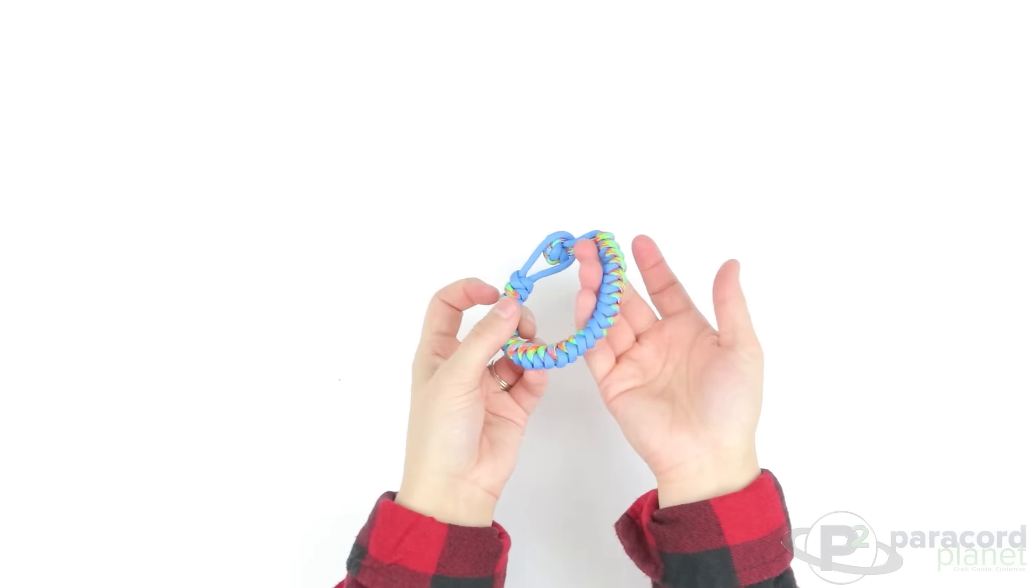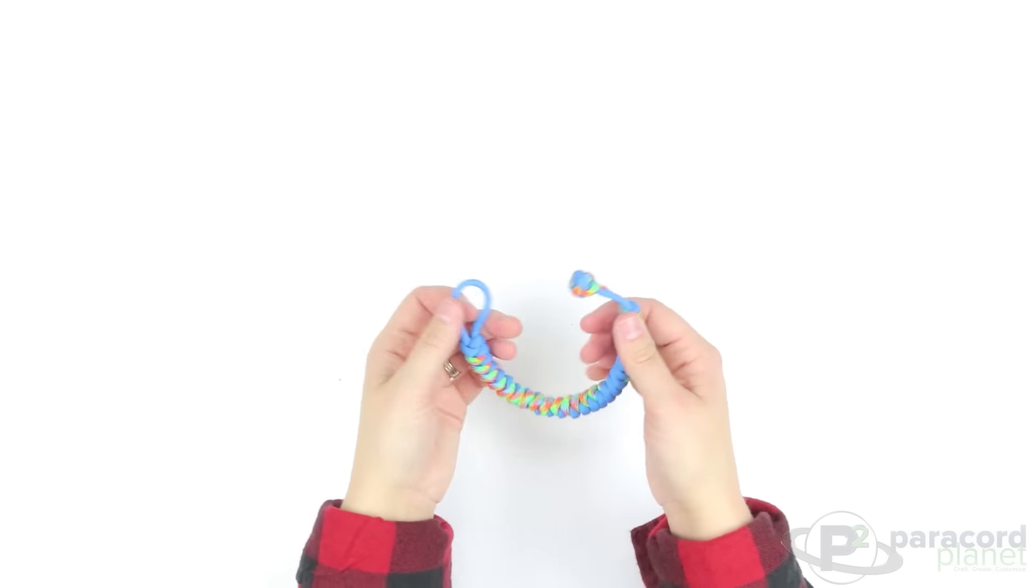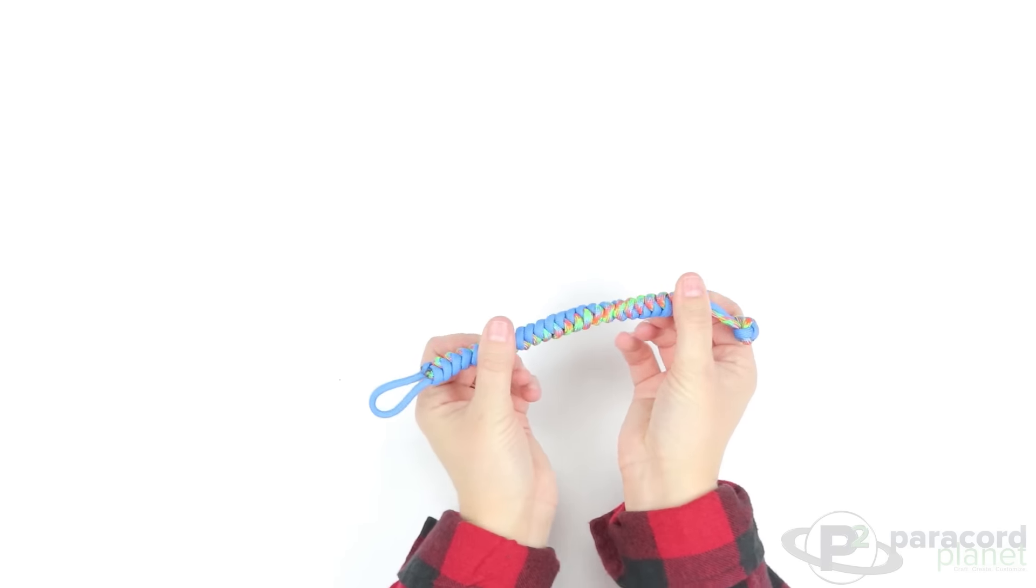Hi everybody, it's Lori from Paracord Planet. Today's tutorial is on the two-colored snake knot bracelet without a buckle.